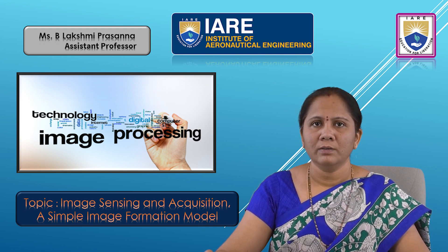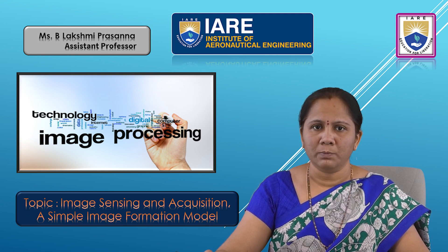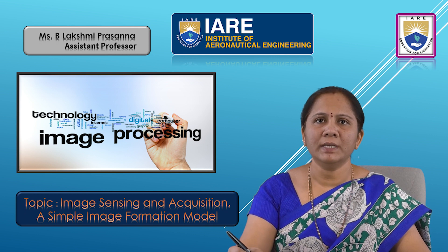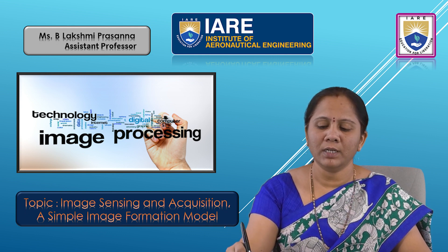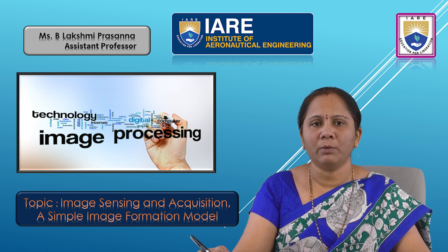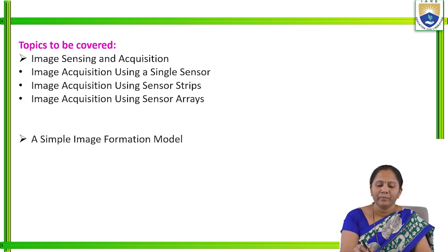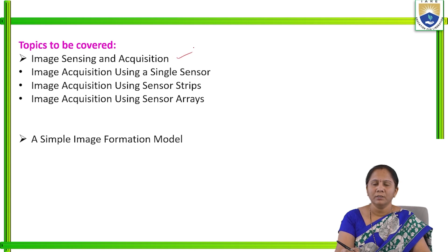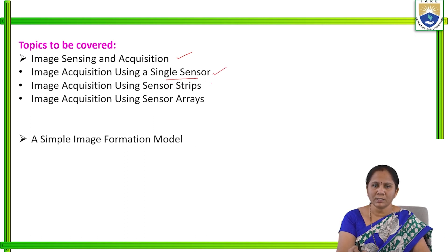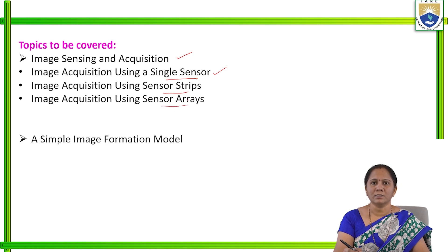In this session, we are going to discuss two important topics. One is Image Sensing and Acquisition, and another one is a Simple Image Formation Model. The internal topics we are going to cover under Image Sensing and Acquisition include Image Acquisition using Single Sensor, Image Acquisition using Sensor Strips, and Image Acquisition using Sensor Arrays.